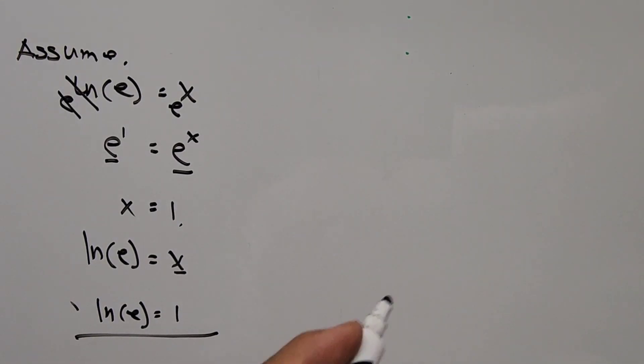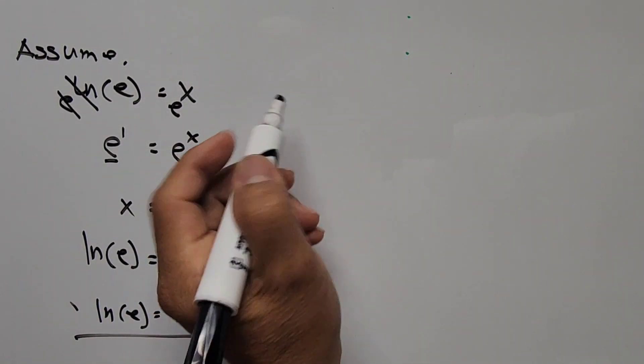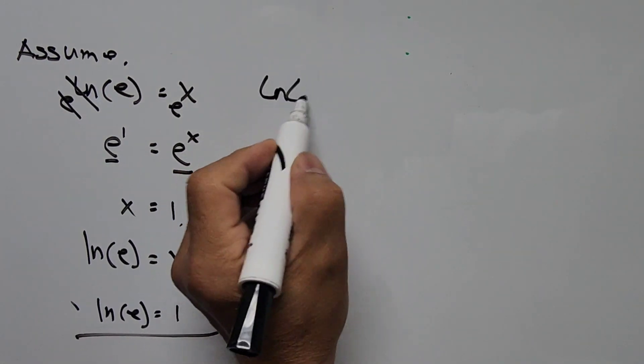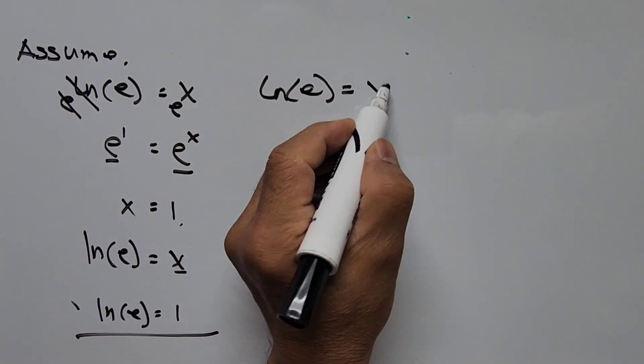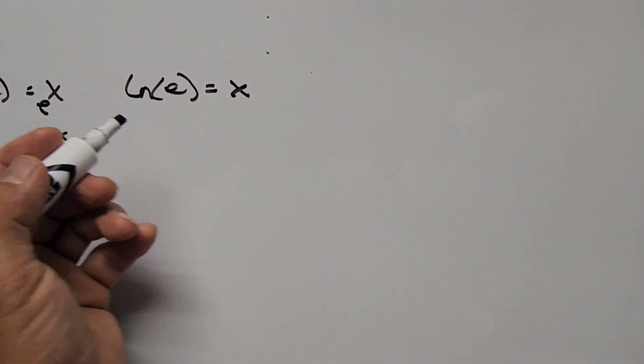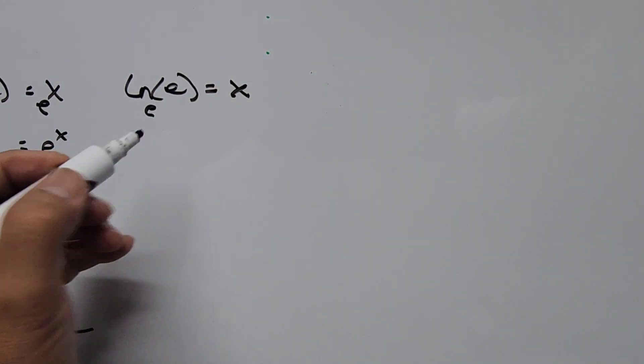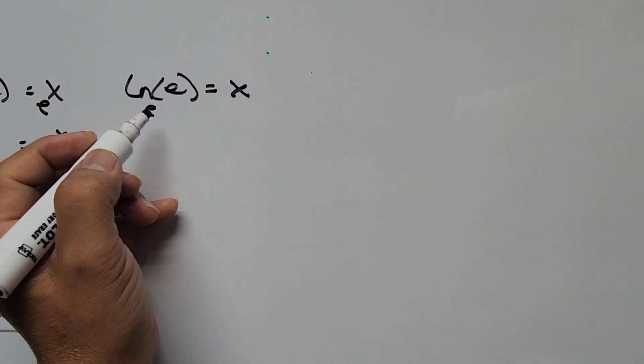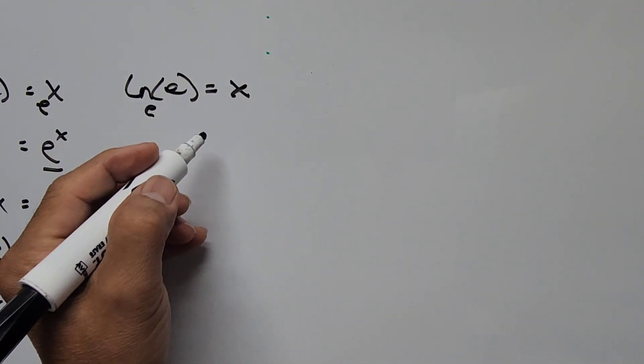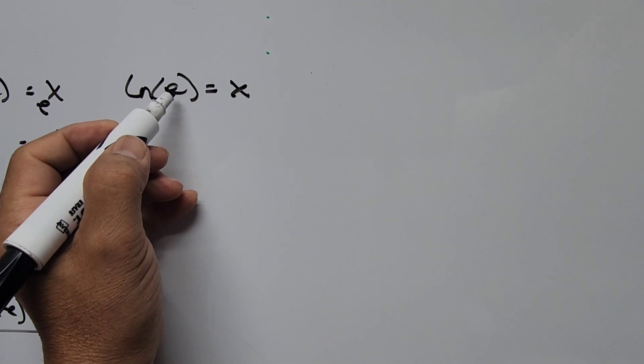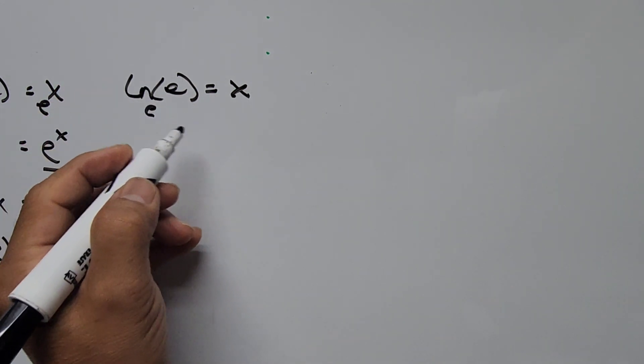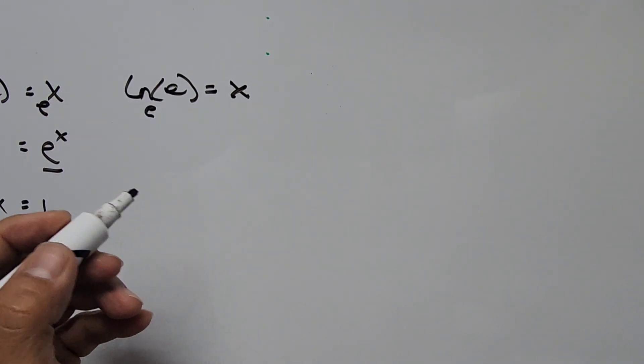The other way to do it is—let's assume again the same way—ln(e) equals x. ln is the logarithm with base e, so if we take the definition of logarithm, e is the base and x is the exponent, and e here is the argument. If we set this in its exponential form...